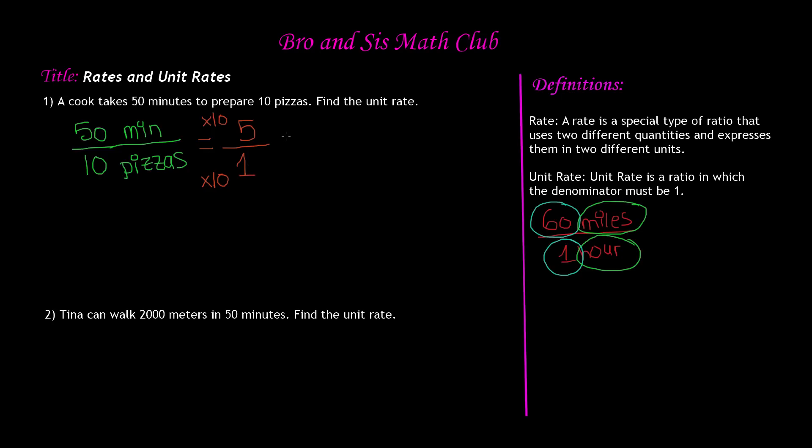If we include our units, 5 minutes and 1 pizza. So what this rate is telling us is that it takes the cook 5 minutes to prepare 1 pizza or that the cook can make 1 pizza in 5 minutes. So that's all what a rate is.